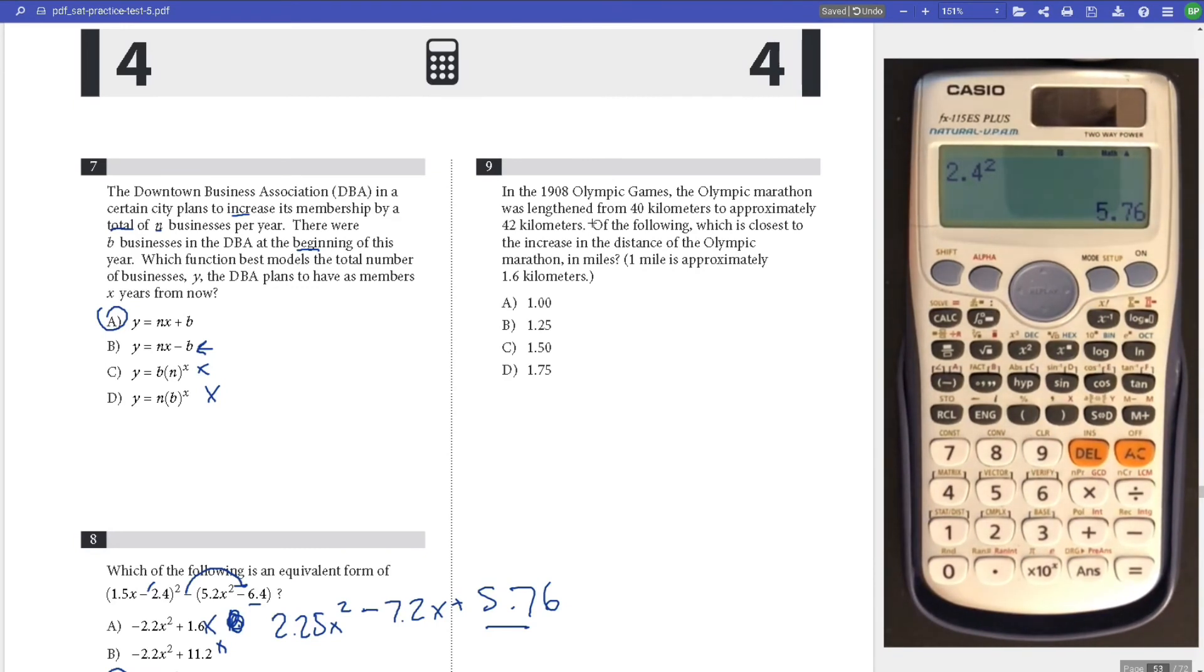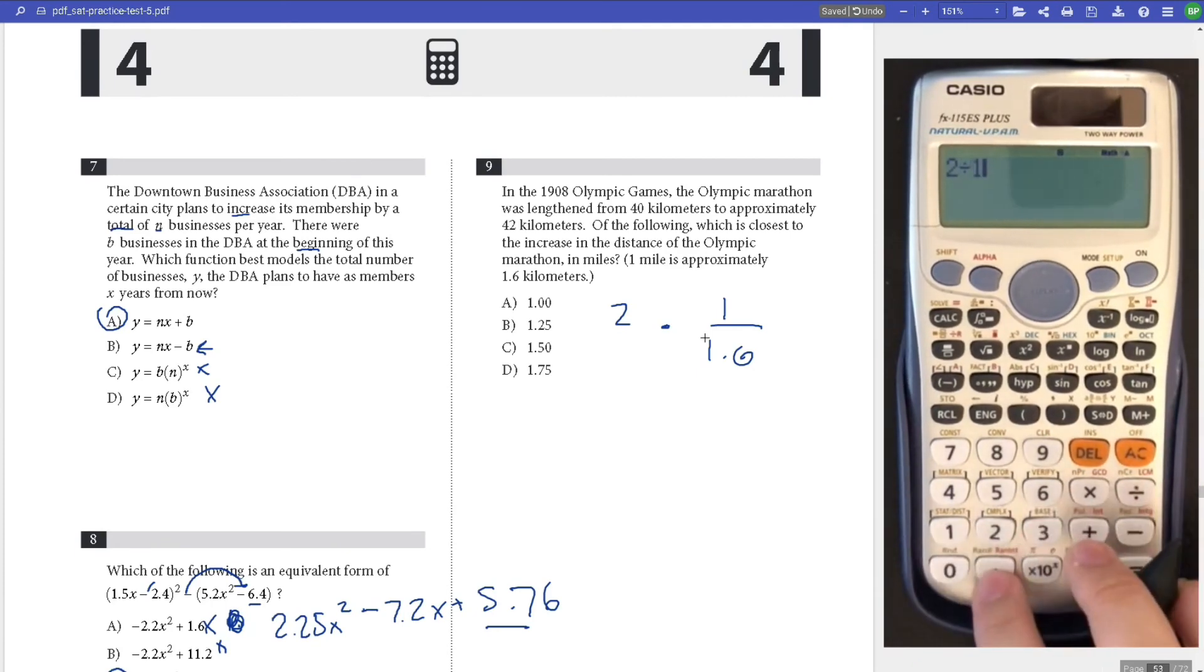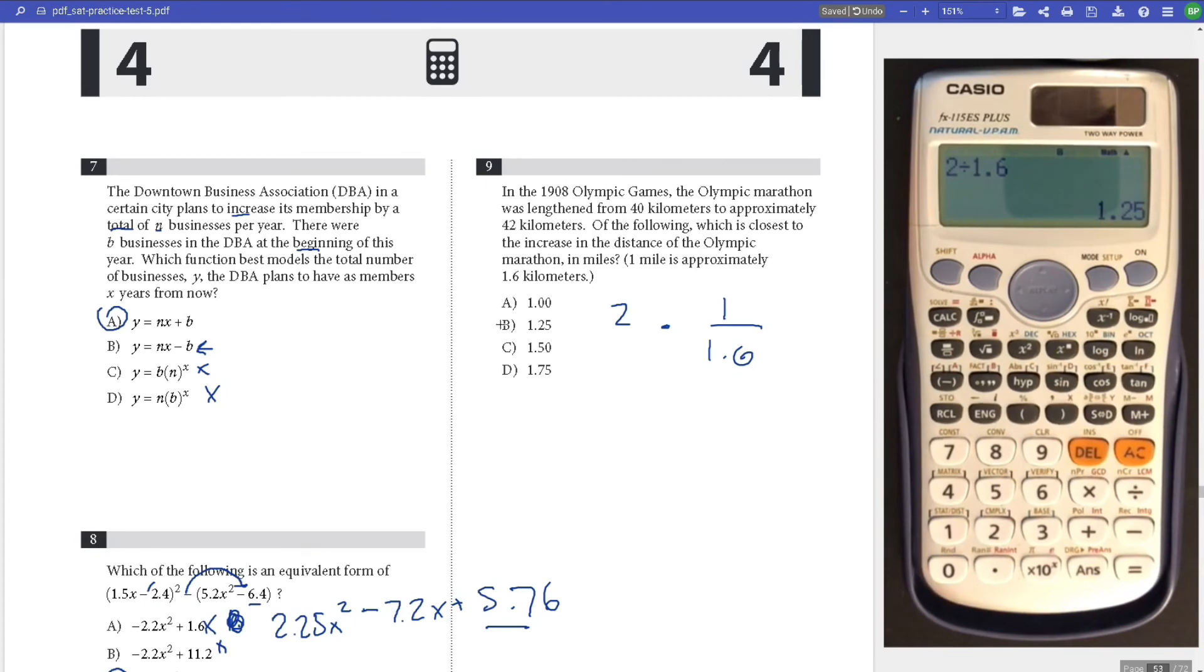Number 9, the Marathon is 40 kilometers and it increased to 42 kilometers. Which is closest to the increase in miles? We have a 2 kilometer increase times that by 1.6 over 1 mile. So 2 divided by 1.6 equals 1.25. Answer is B.